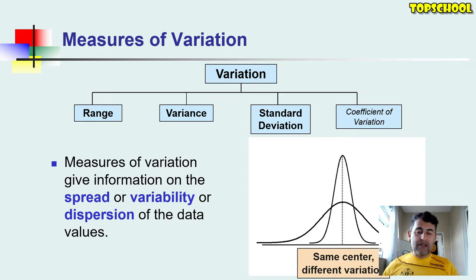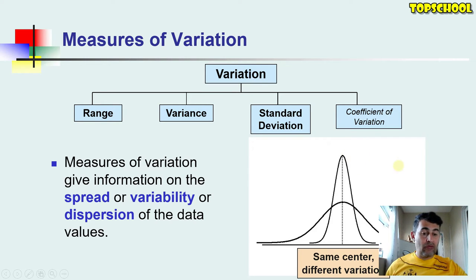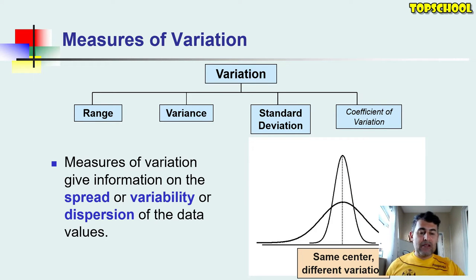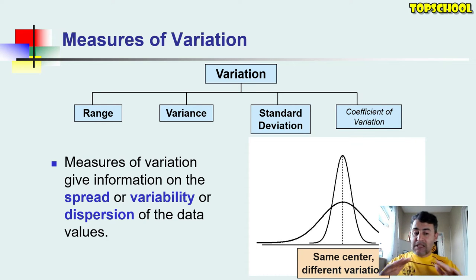The measurements of variability include range, variance, standard deviation, and coefficient of variation. Measures of variation give information on the spread or variability — the dispersion of the data values. For instance, looking at this graph, we have two dispersions of data. Both of them have the same center — the same central tendency, in this case the mean — but they have different variability.